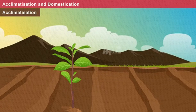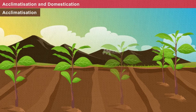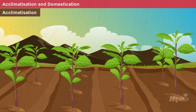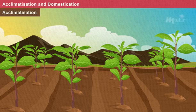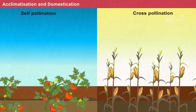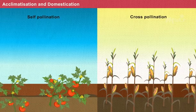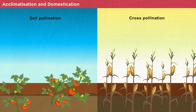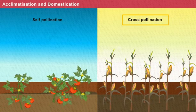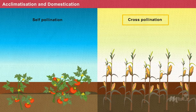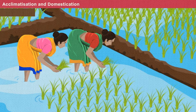Acclimatization: the process by which a new variety of crop adapts to a new environment is known as acclimatization. Basically, the crop having more variability adapts more easily. That is, cross-pollinated crops adapt easily to a new environment than self-pollinated crops.